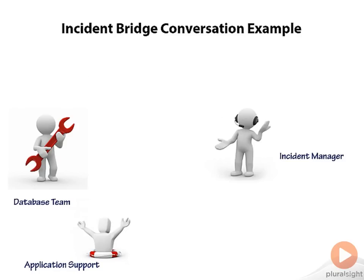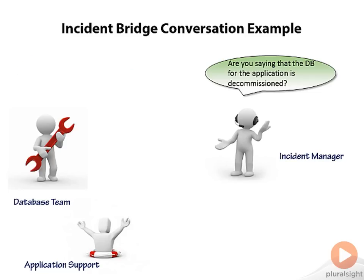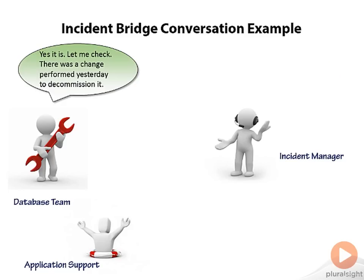Users are reporting that an application called ABC is down. The incident manager has gathered all technical teams on a call, including the database and application support teams. The Windows team and the network team have reported that their infrastructure is normal without any anomalies. The database team then reports that it seems the database has been decommissioned. The incident manager confirms: 'Are you saying the database for the application is decommissioned?' The database team confirms that a change was performed yesterday to decommission it.